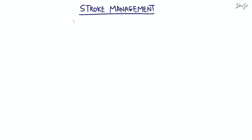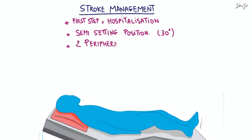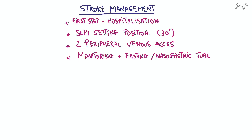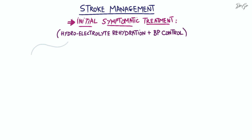The Therapeutic Management of Stroke in the Emergency Department. The first step is hospitalization in a neurovascular unit if possible. Place the patient in a semi-sitting position at 30 degrees, establish two peripheral venous access, and perform cardiovascular and blood pressure monitoring. Ensure that the patient is fasting; in some cases, a nasogastric tube may be necessary. Initial symptomatic treatment consists of hydroelectrolytic rehydration and blood pressure control.